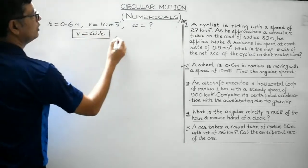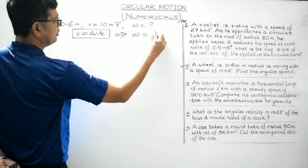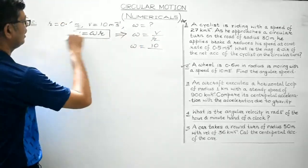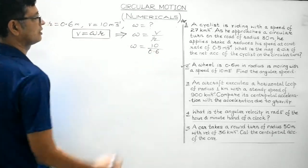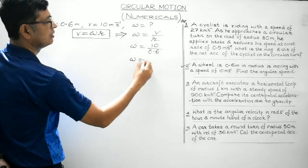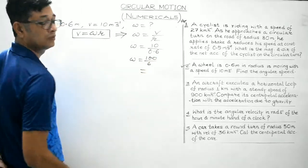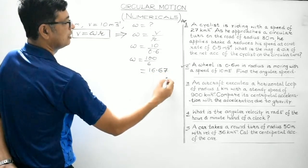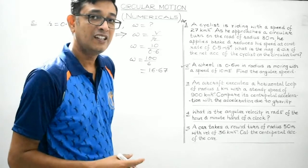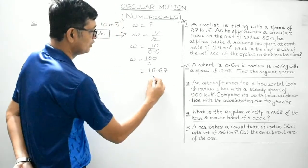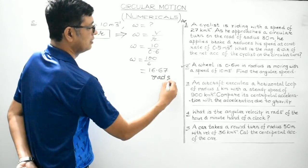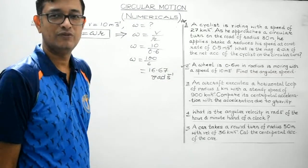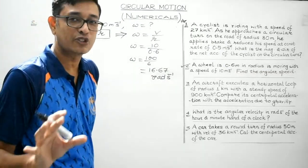Angular speed ω = v/r = 10 divided by 0.6, which gives 100/6 = 16.67 radians per second. The SI unit of angular speed is radians per second. That's the solution of question number 2, based on the formula v = ωr.